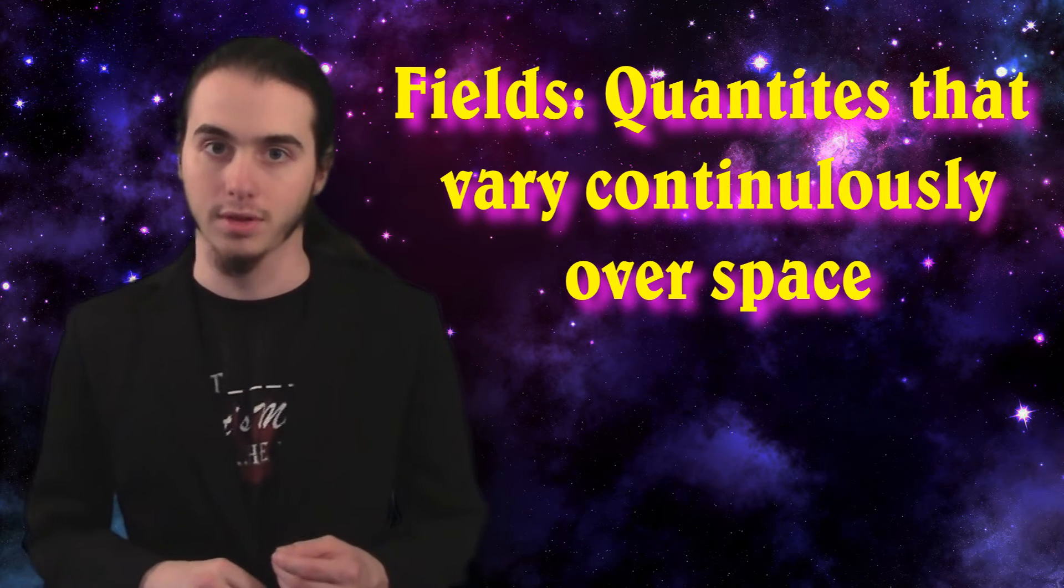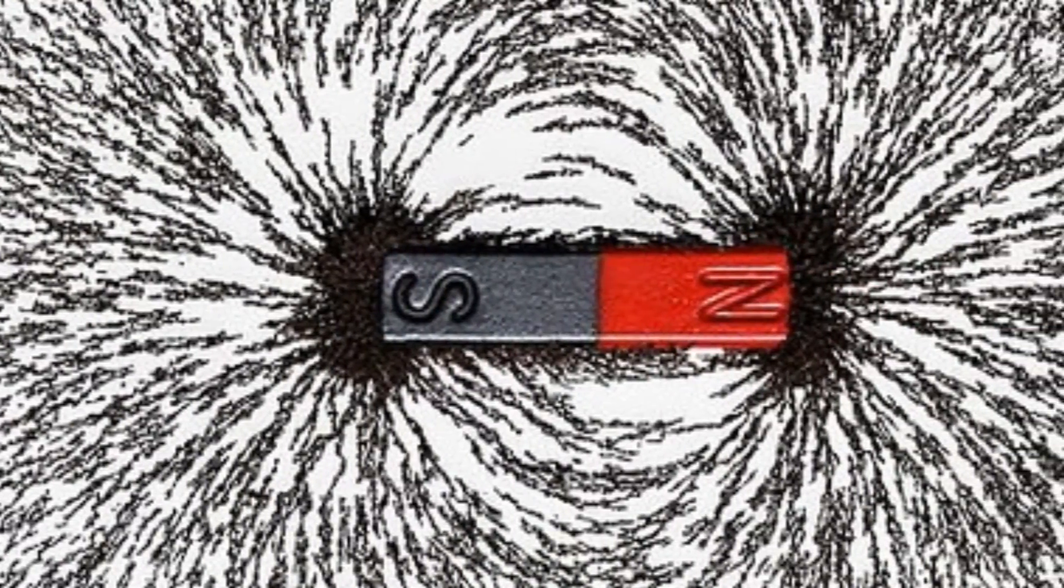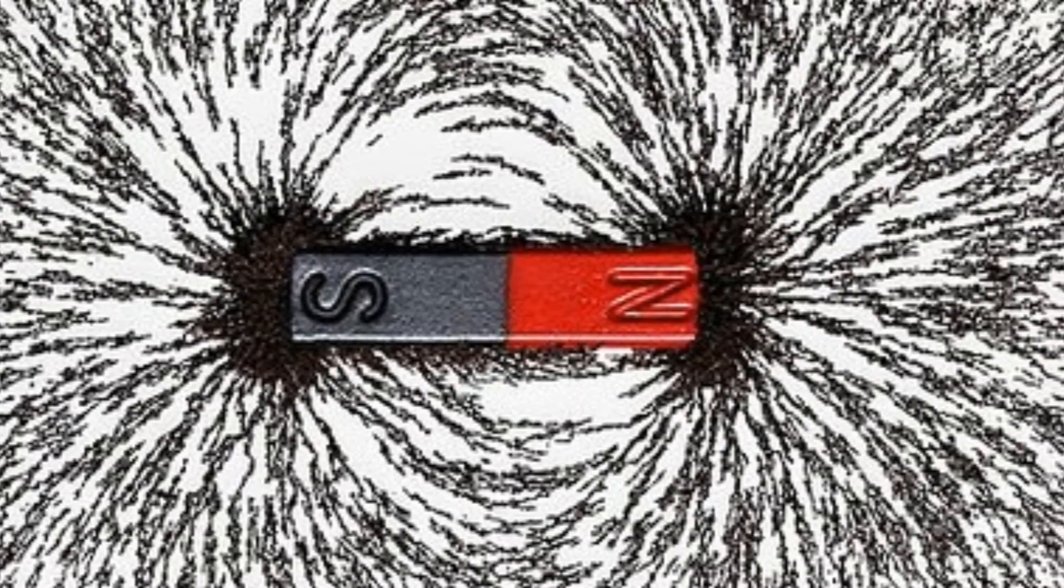And that's what causes those weird lines when you put a magnet under a sheet of iron flakes.